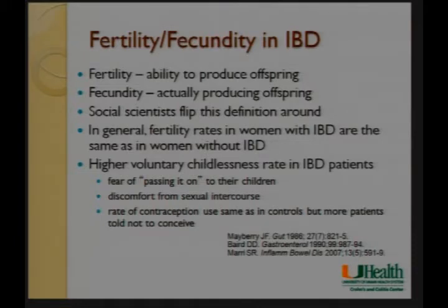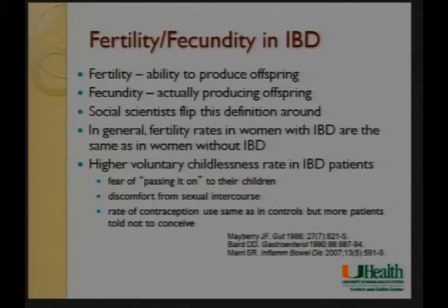In most species that's not really an issue — they're the same thing, because many species don't choose when to produce offspring. But particularly in our species, where we certainly have the option, it's an important differentiation. In social science articles you'll see these definitions sometimes flipped, but for the purpose of our science: fertility is the ability to have offspring and fecundity is the willingness to actually produce offspring.